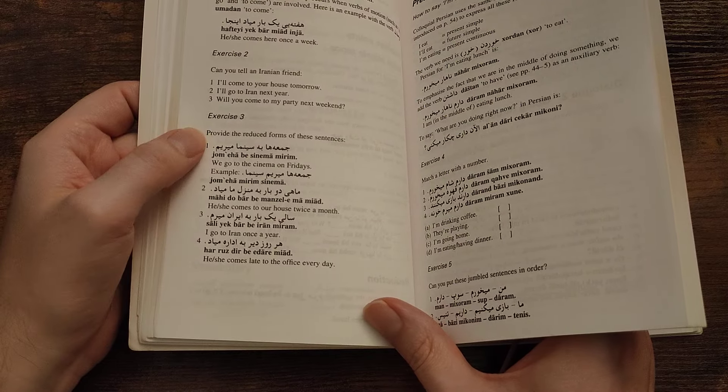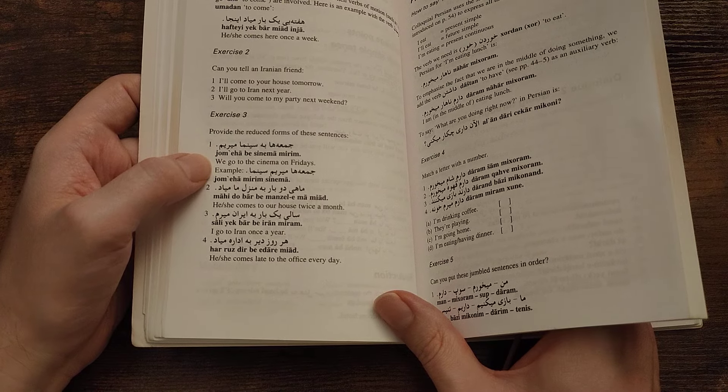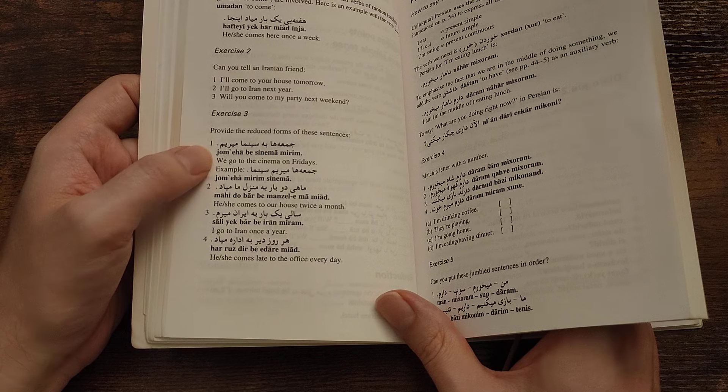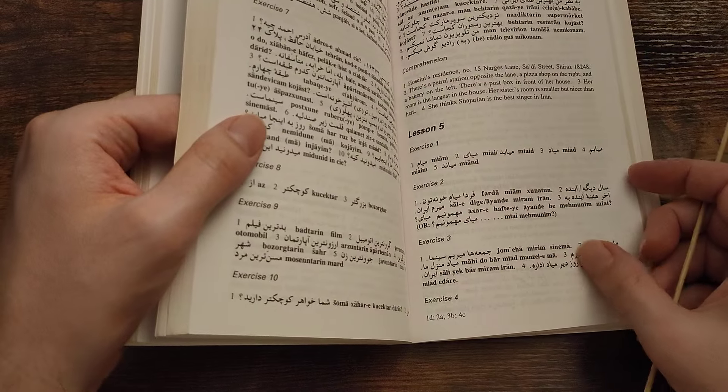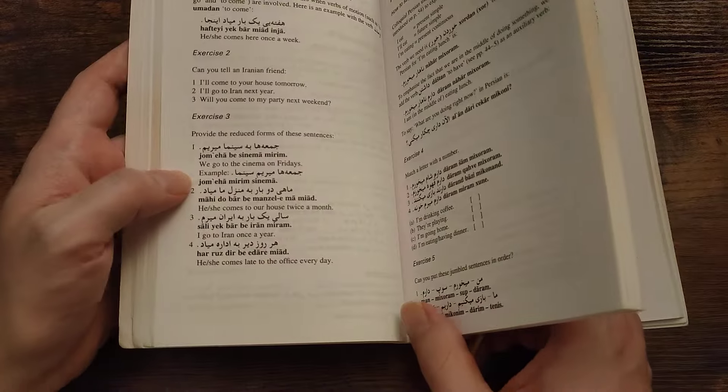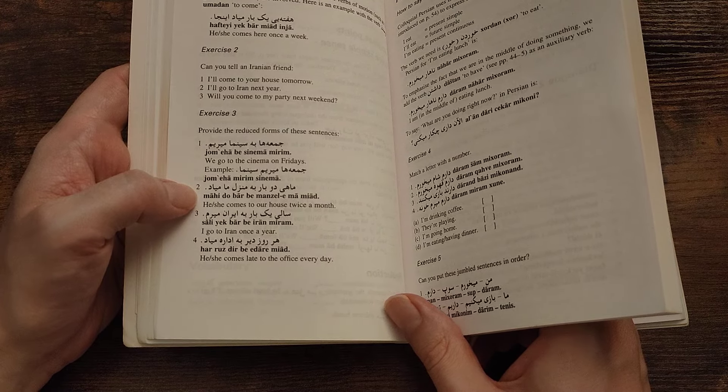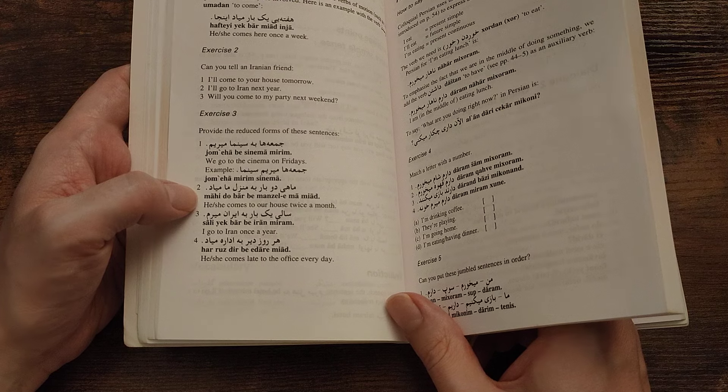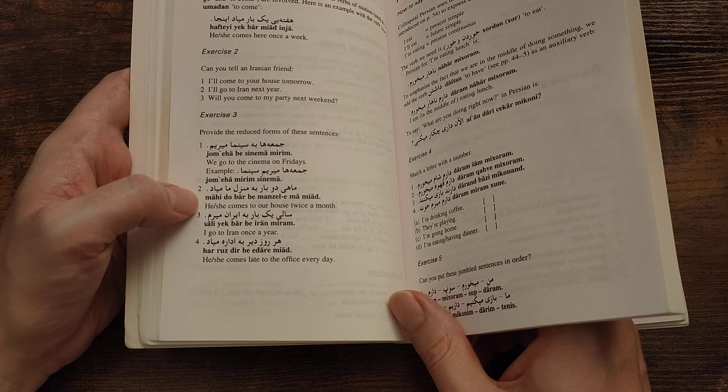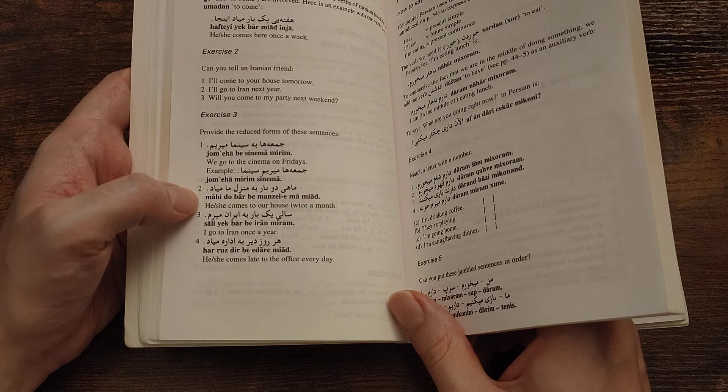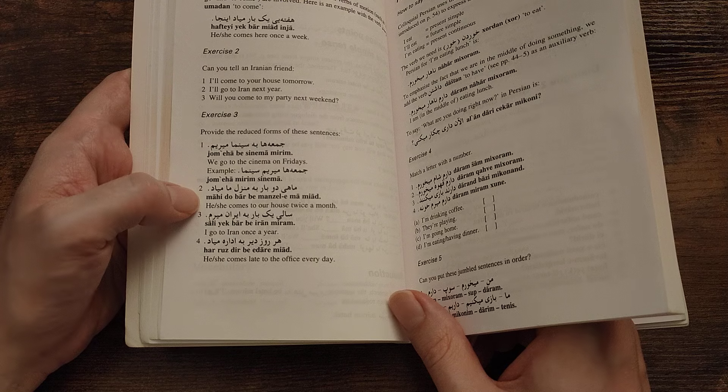Let's do one more. Exercise three. Provide the reduced forms of these sentences. We go to the cinema on Fridays. So I would say we go to the cinema. Yep. Yeah, makes sense.